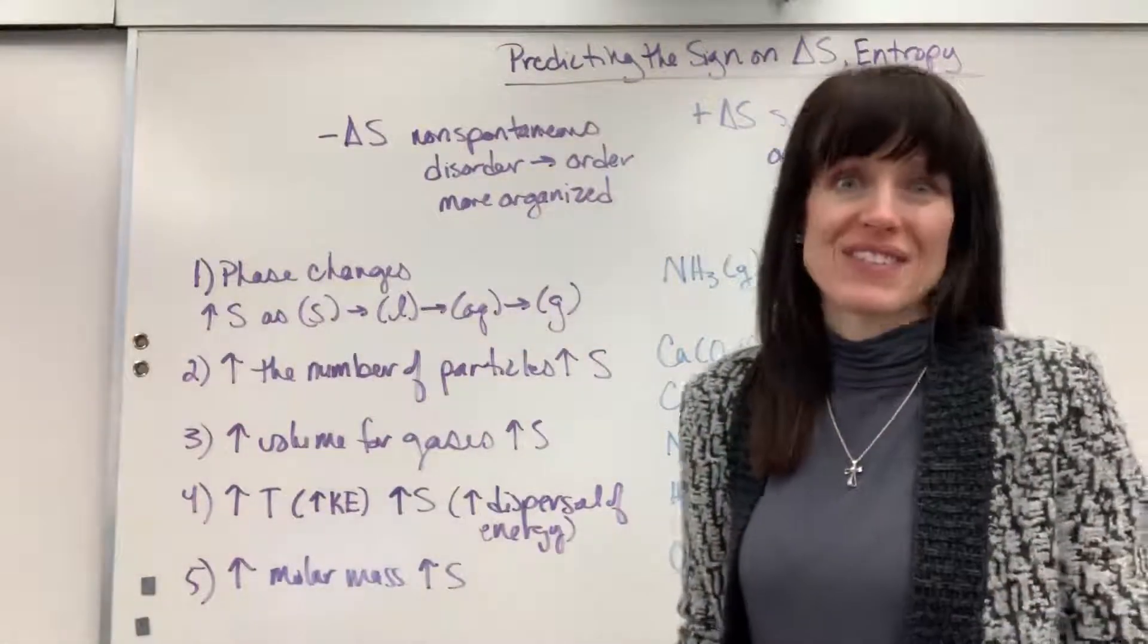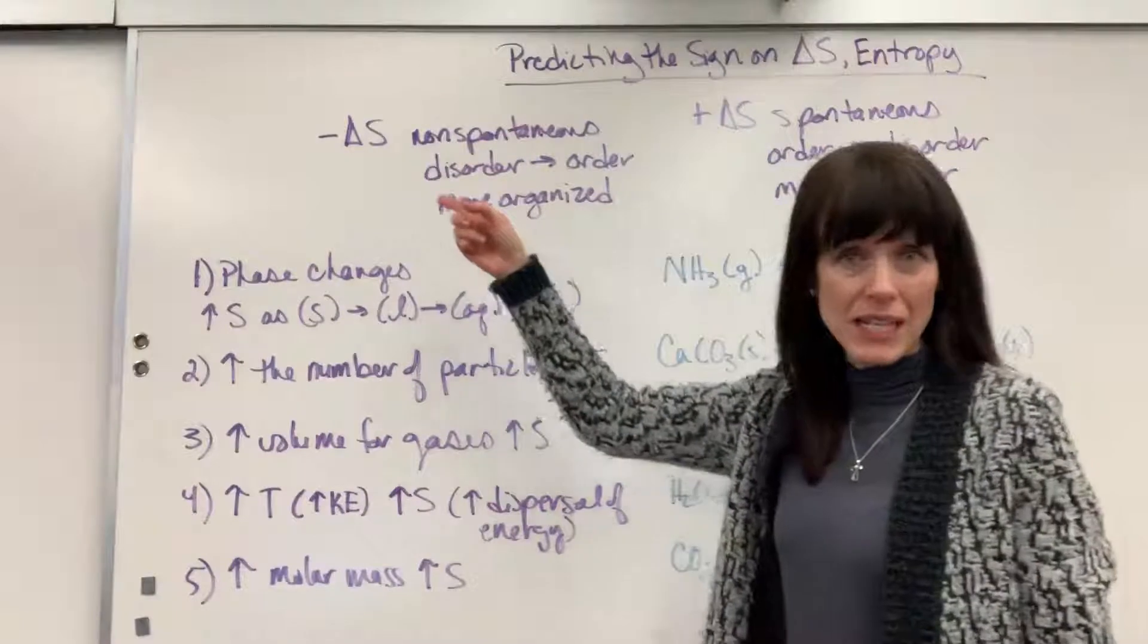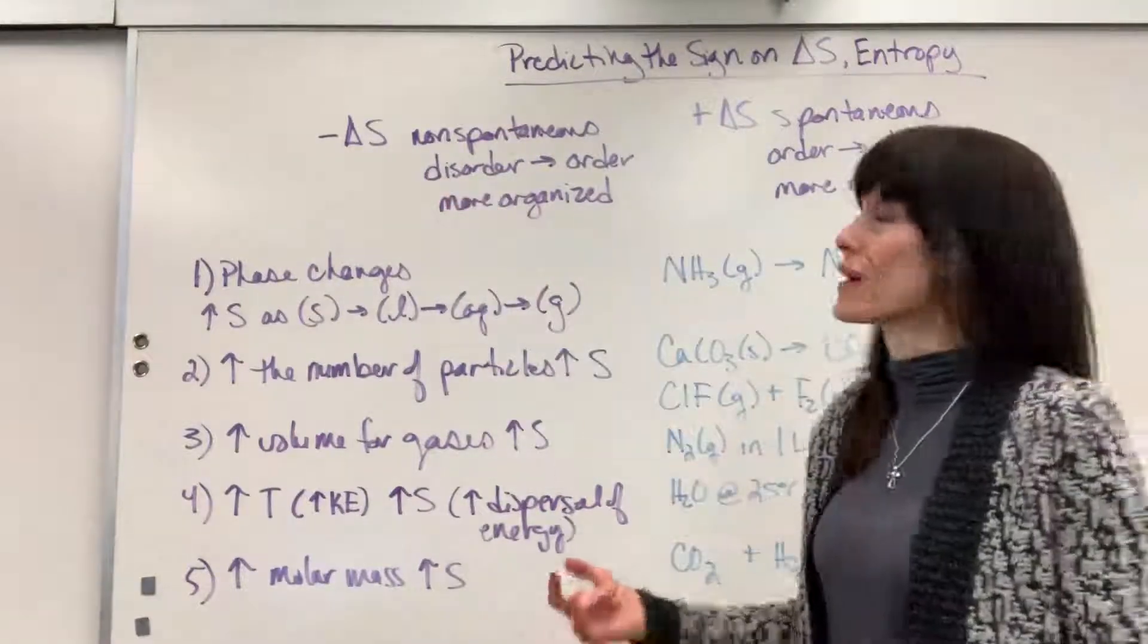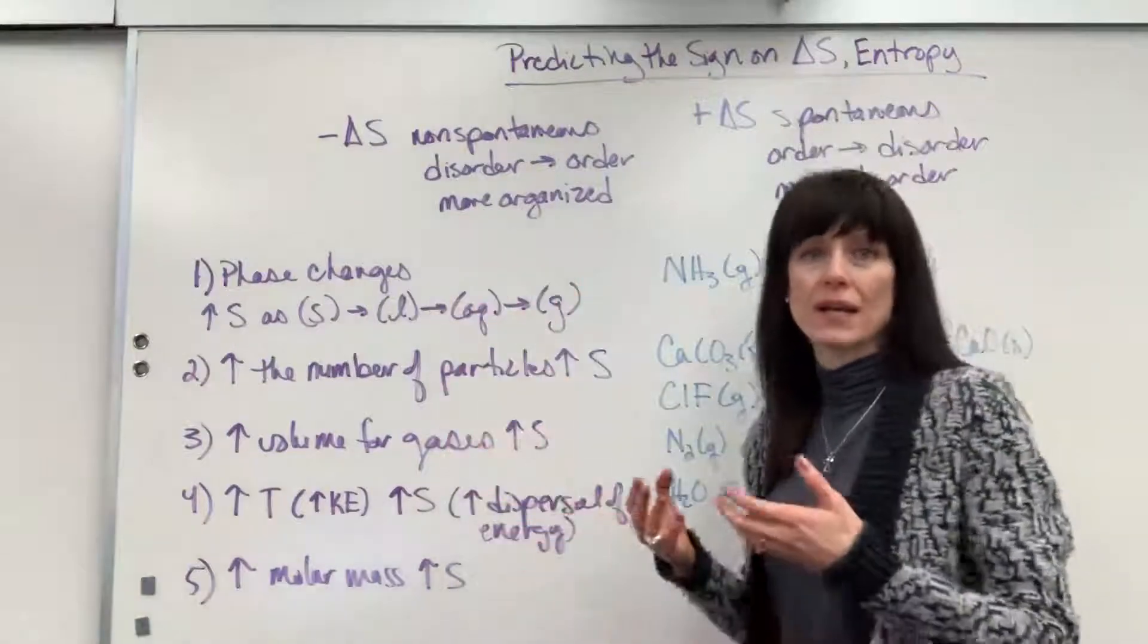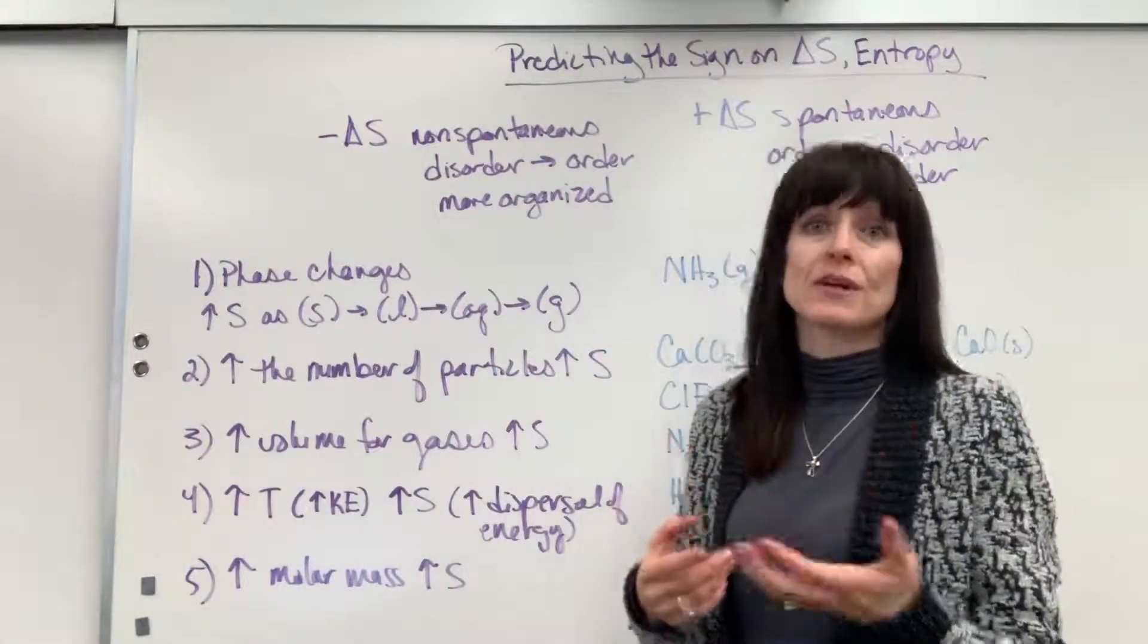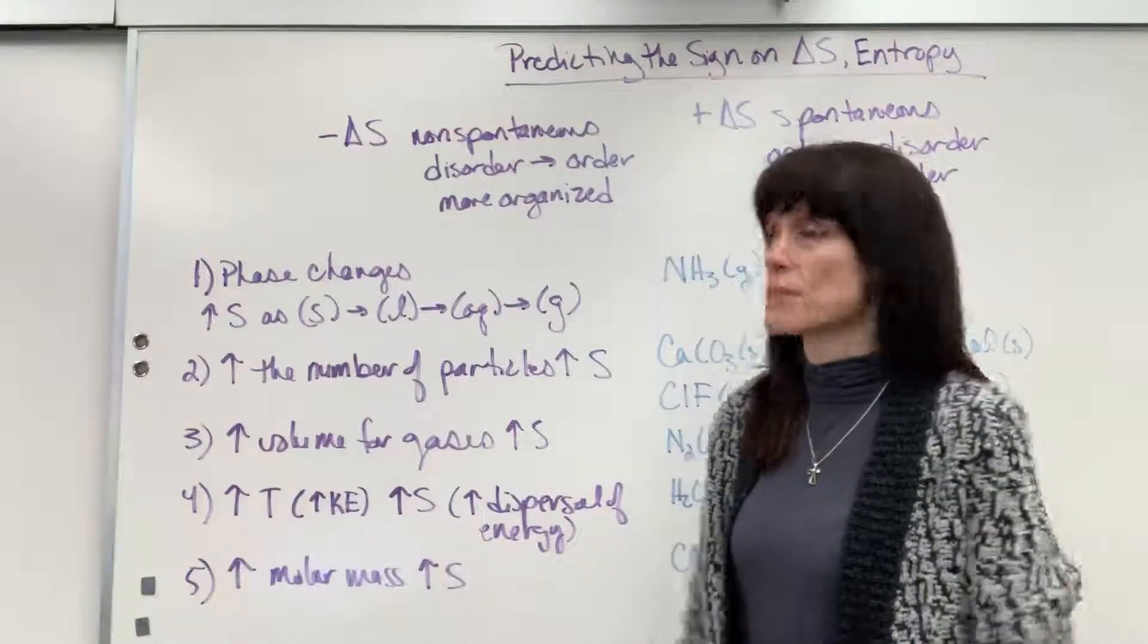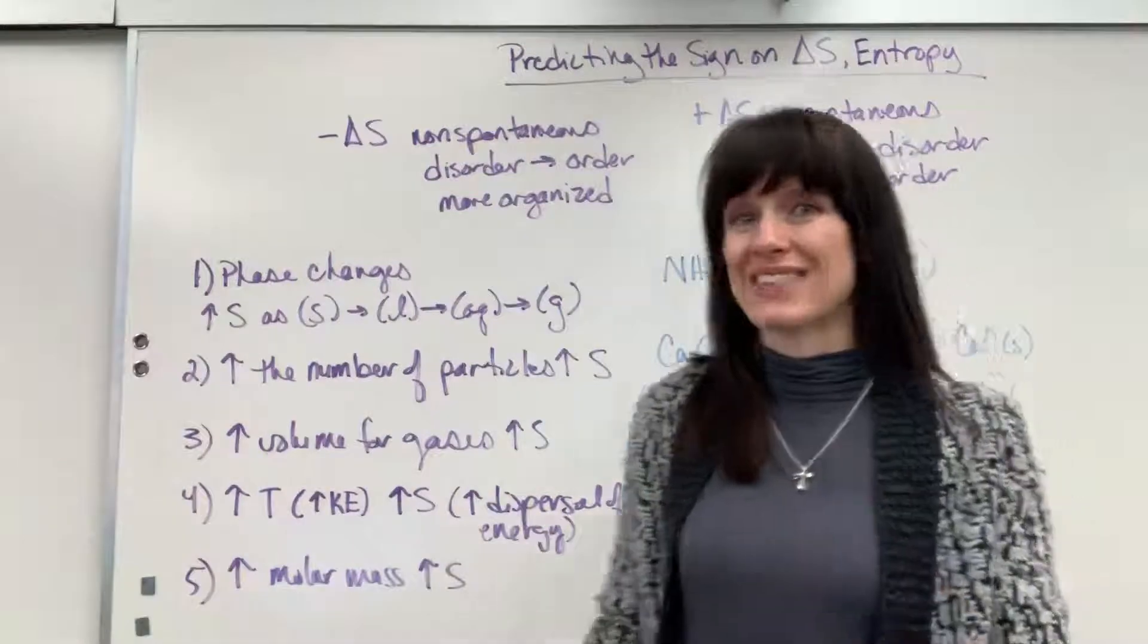So just a little reminder, the signs for delta S. We have a negative, that means not spontaneous, and that's code for going from disorder to order. So the system is becoming more organized. Anytime we're creating more organization, more order, it takes energy. So that's not spontaneous. So anything that's becoming more ordered, more organized, negative delta S.